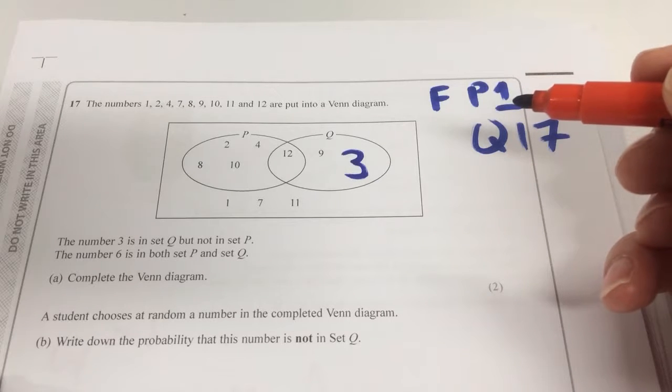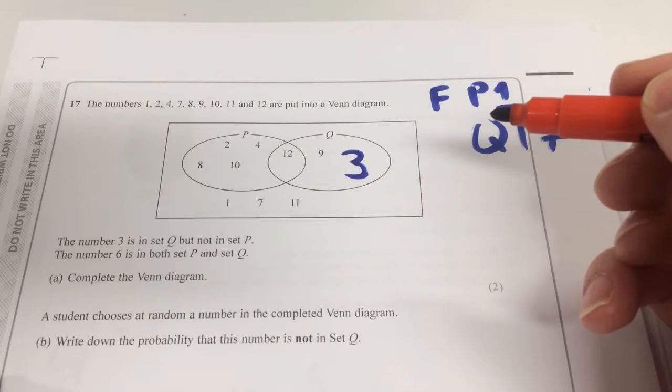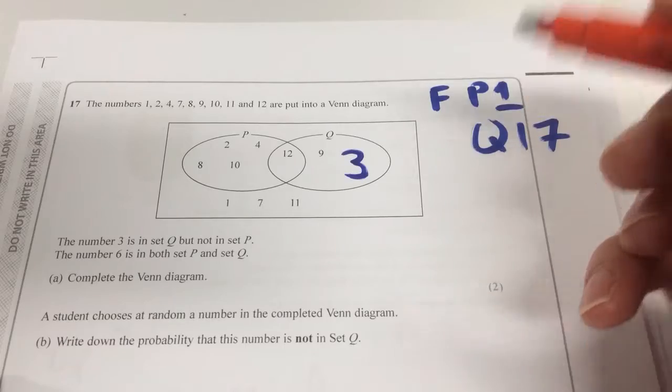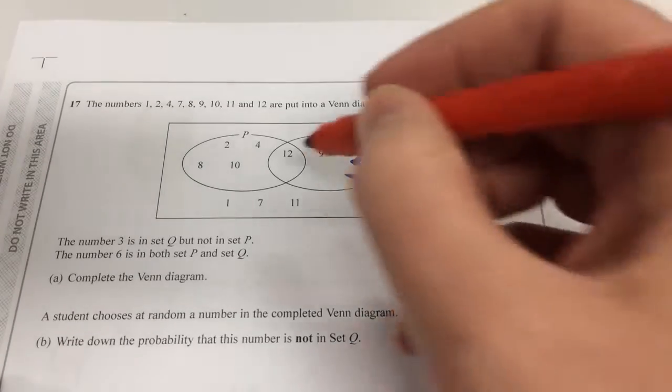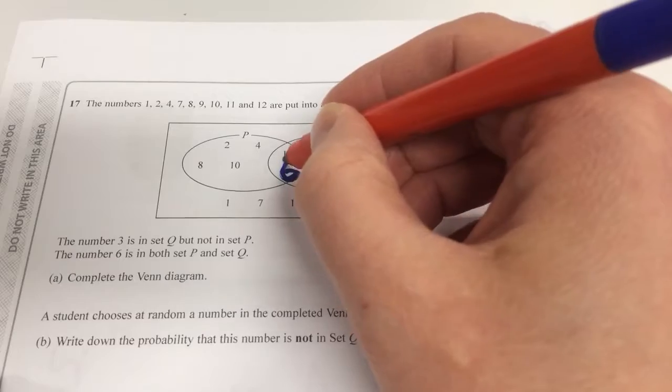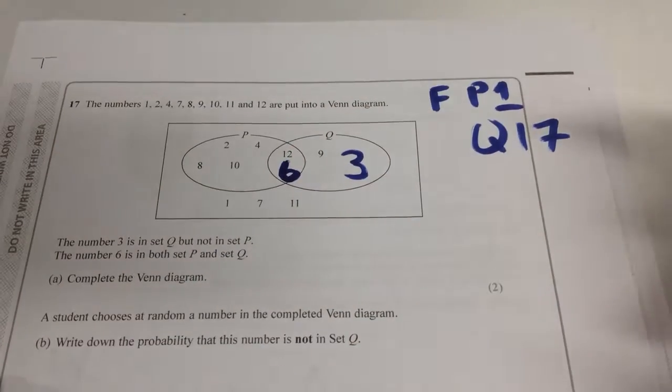And 6 is in both P and set Q. So where does that go? In the intersection. In the middle, which, yes, intersection. Well done. Correctly named the intersection. So that's a 6 there.